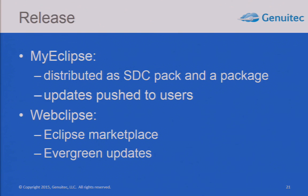We release using SDC for MyEclipse and Eclipse Marketplace for WebClips. We've also made a small plugin called Evergreen, which reads a manifest from the internet and compares the versions of IUs of plugins in that manifest with those installed in your Eclipse. It's a very fast process. Once it detects that the versions are different, we run the P2 update — which is slow because it has to download all the artifacts — but we can quickly check and update. It's also happening in the background, so updates are installed once the user restarts Eclipse.